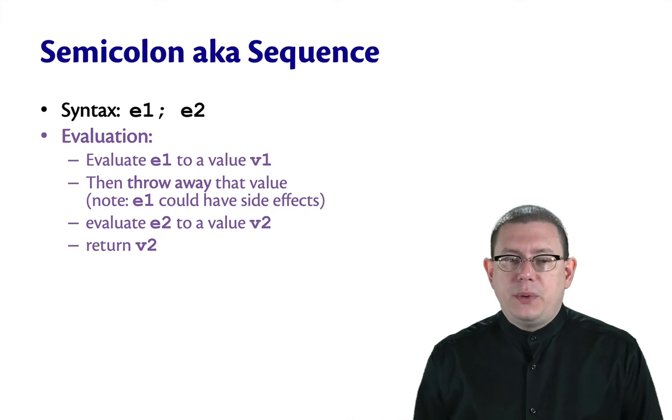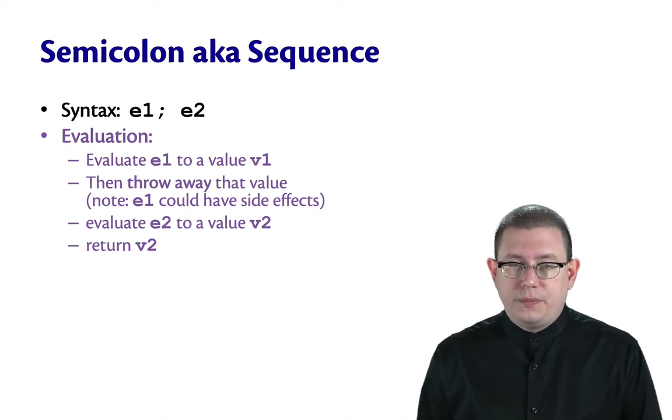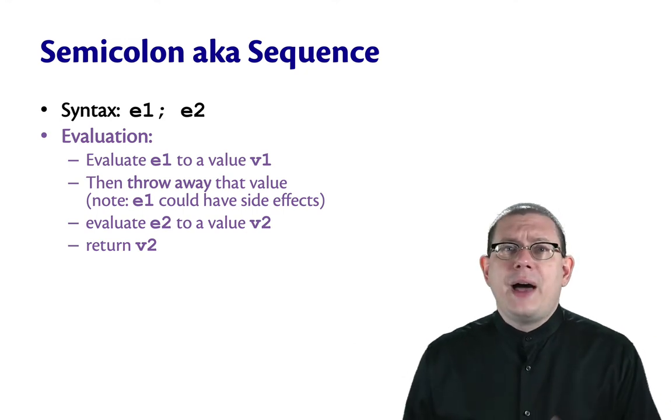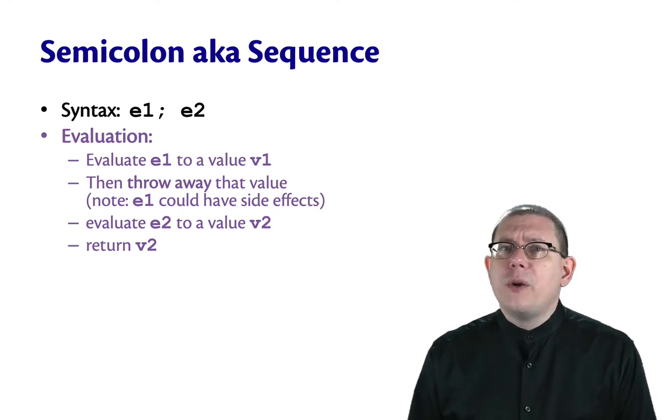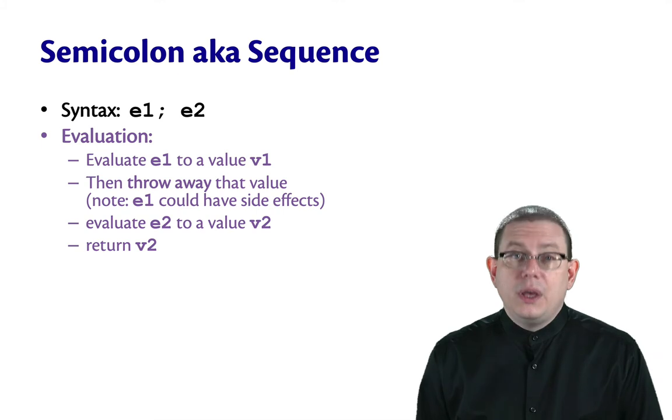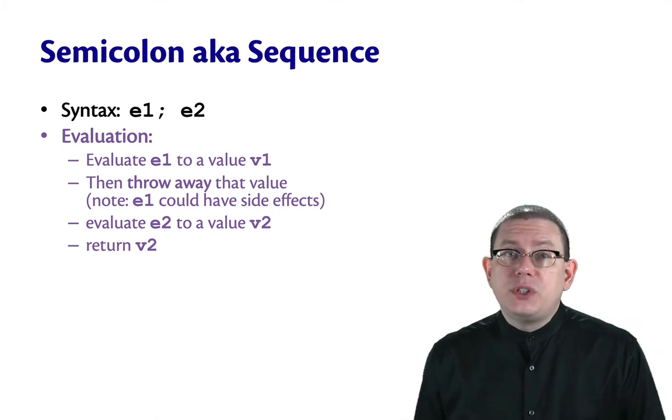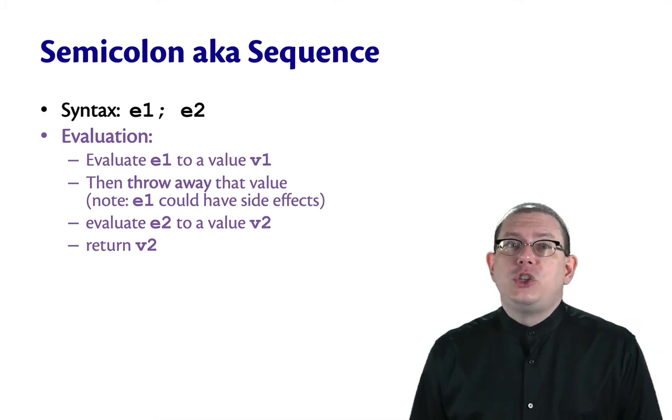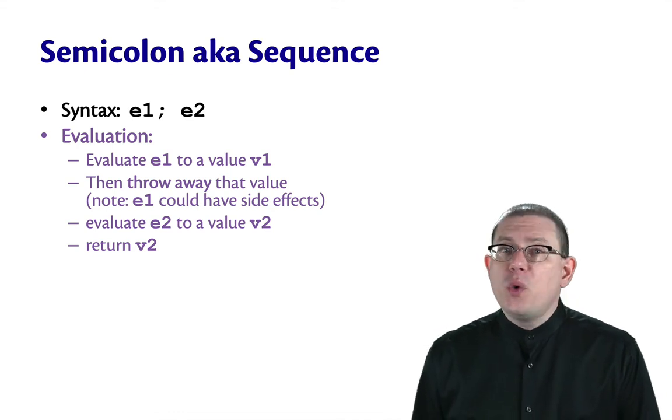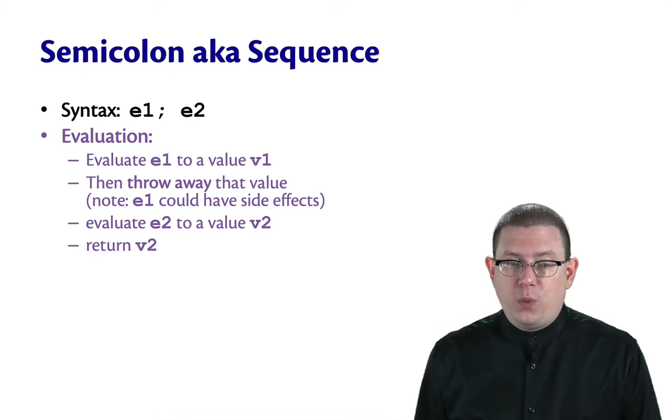To evaluate such a sequence, first evaluate E1 to a value V1, then throw away that value. We don't care about V1 as a result of this. The only reason we're doing a sequence of expressions like this is to evaluate them for their side effects. We don't care about the value of E1.